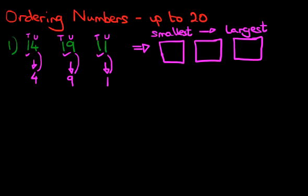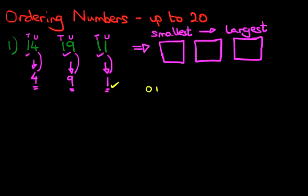What units do we have? We've got four, nine, and one. We've taken the four from 14, the nine from 19, and the one from 11. We haven't added the tens because the tens are all the same. So the numbers we are now comparing are four, nine, and one. We can use the counting method — start with zero and count upwards until we hit each of these numbers. After zero is one — there it is, one. That is our first number, the smallest.